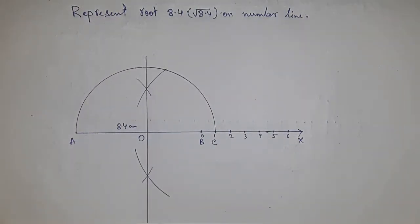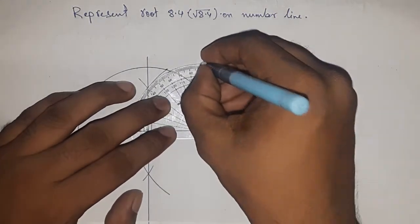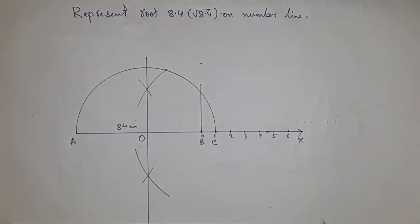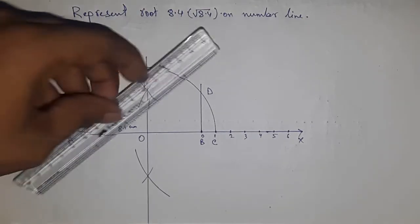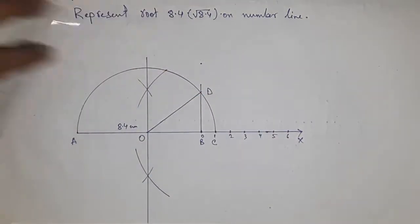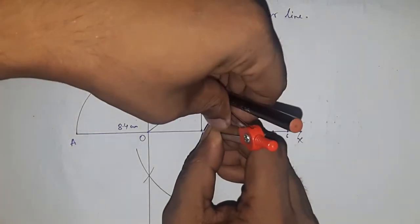Now drawing a 90-degree angle at point B using a protractor, so drawing 90 degrees. Now joining this and which meets at a point D. Now joining O and D.